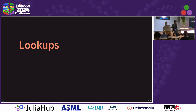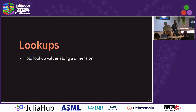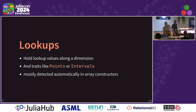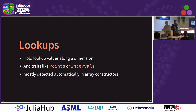The next concept is lookups. These used to be the same thing, and they're separate now. A lookup is an array that holds values along a dimension and has traits like points and intervals. But most of these are detected automatically from your data. So when you're using dimensional data, half the time you don't know these exist — they're kind of in the background making things work. But they allow us to dispatch on some of the things I'll show you later to give correct selecting behavior of intervals and points and fast lookups. So we know the order of arrays already, things like that.